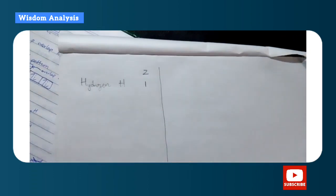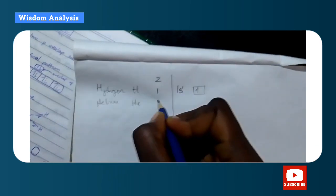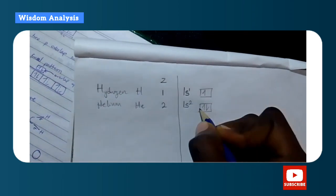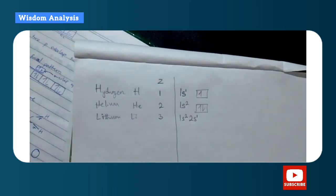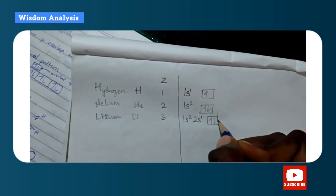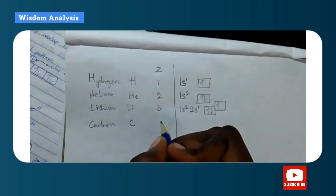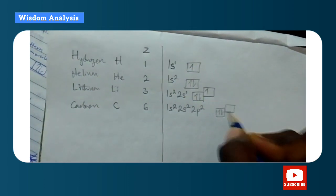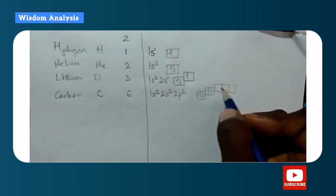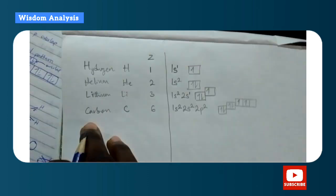For hydrogen (Z=1): 1s¹. For helium (Z=2): 1s² — the s orbital is complete and the second electron has opposite spin. For lithium (Z=3): 1s², 2s¹. For carbon (Z=6): 1s², 2s², 2p² — the s is complete and now we enter 2p, where electrons spread out following Hund's Rule.